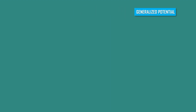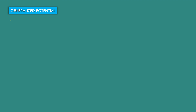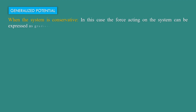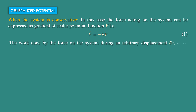Generalized potential when the system is conservative. In this case, the force acting on the system can be expressed as the gradient of a scalar potential function V, that is F equal to minus del into V. The work done by the force on the system during an arbitrary displacement delta r_i of the system is delta W equal to summation i goes from 1 to N, vector F_i dot delta r_i.